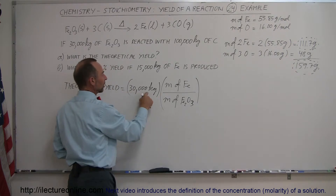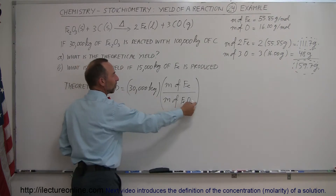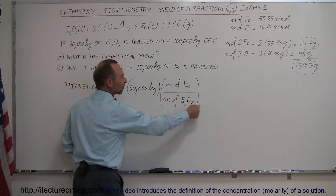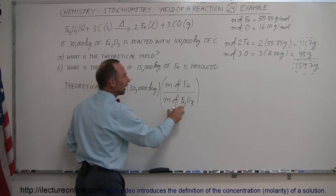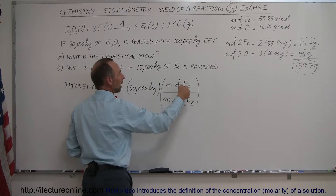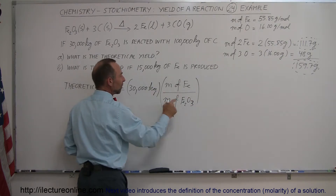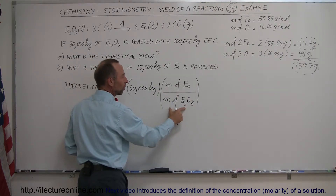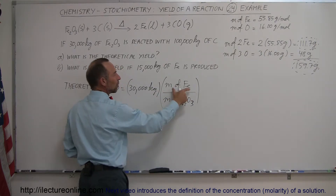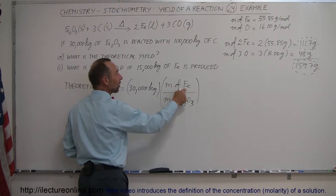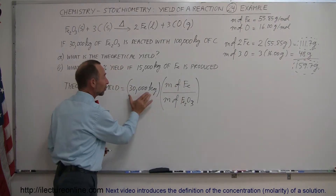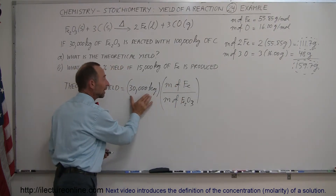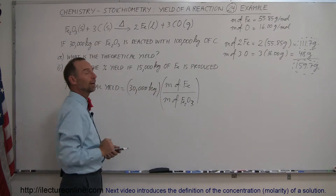If the 30,000 kilograms represents the total mass of iron oxide ore, we divide by the molar mass of iron oxide and multiply by the molar mass of just the iron. That gives us the ratio of the total starting mass that is just iron.